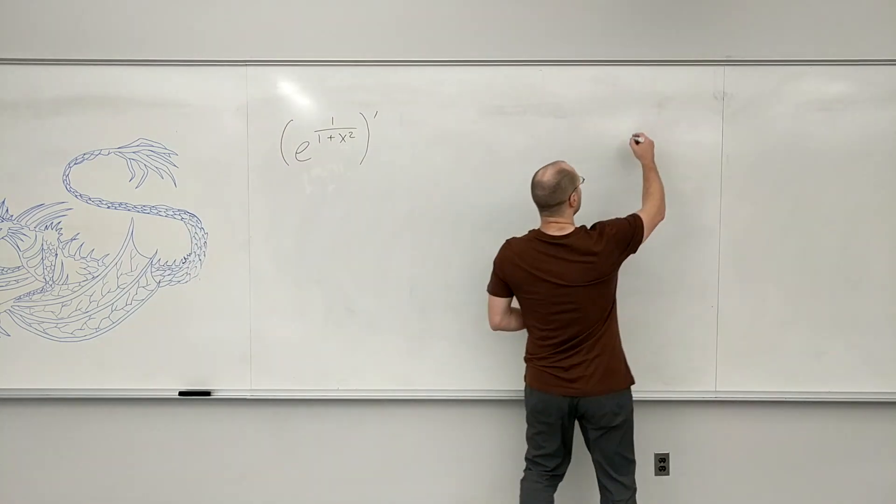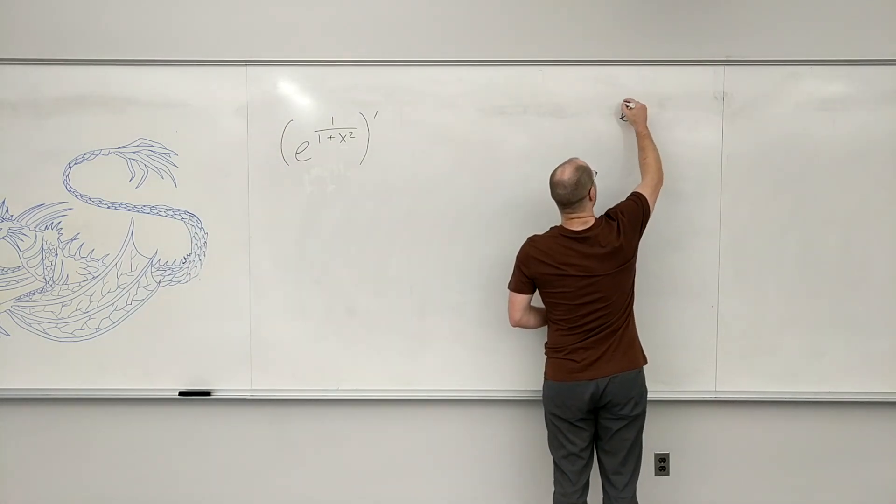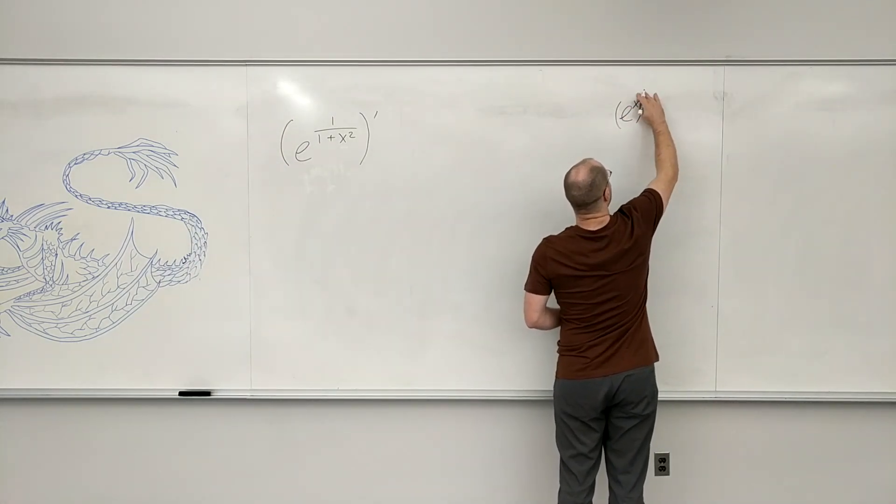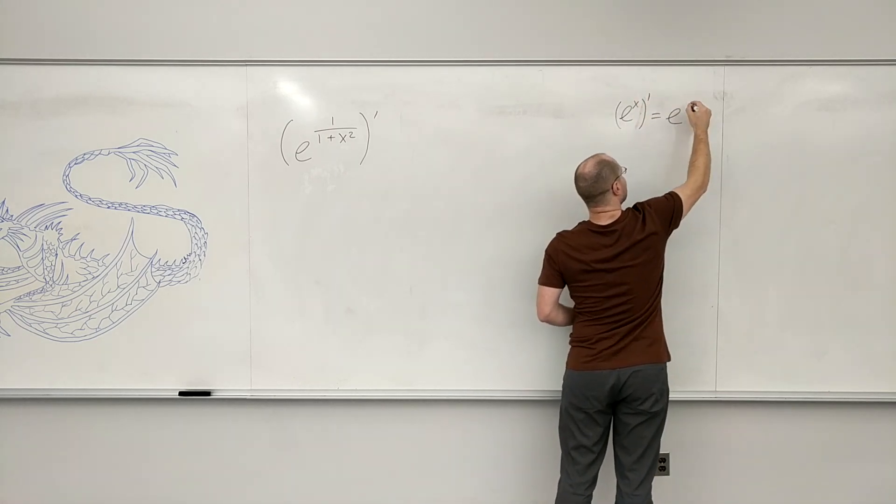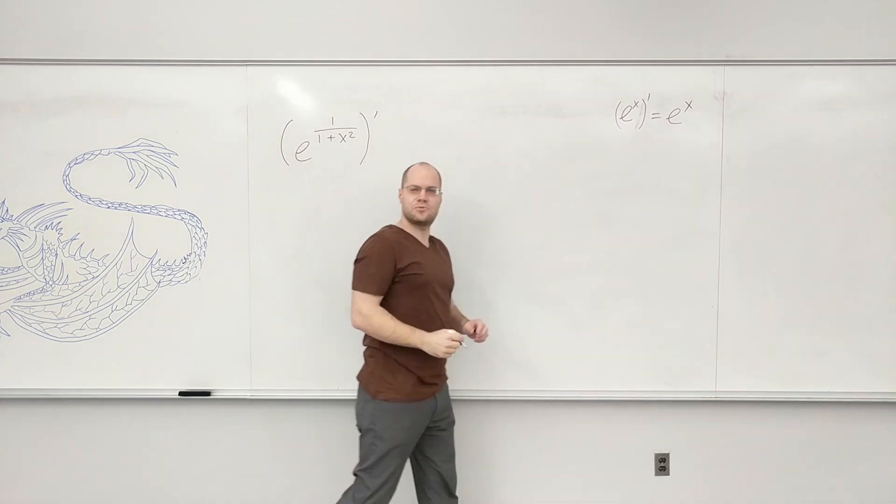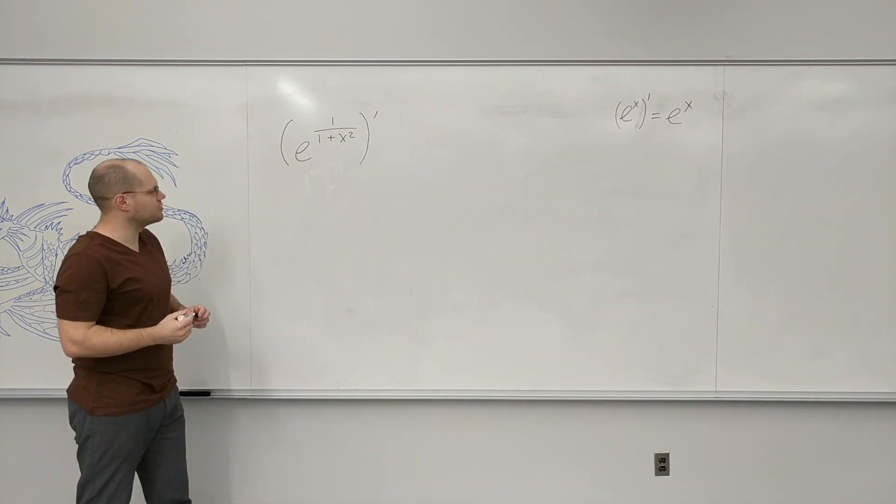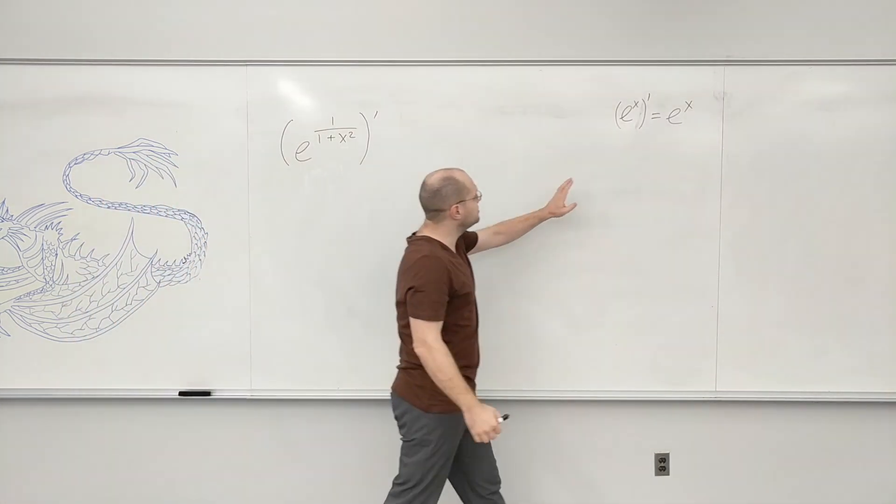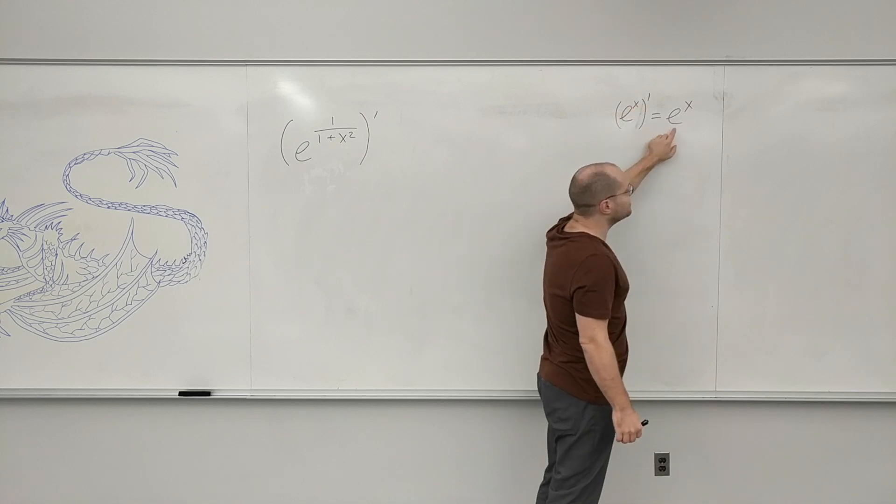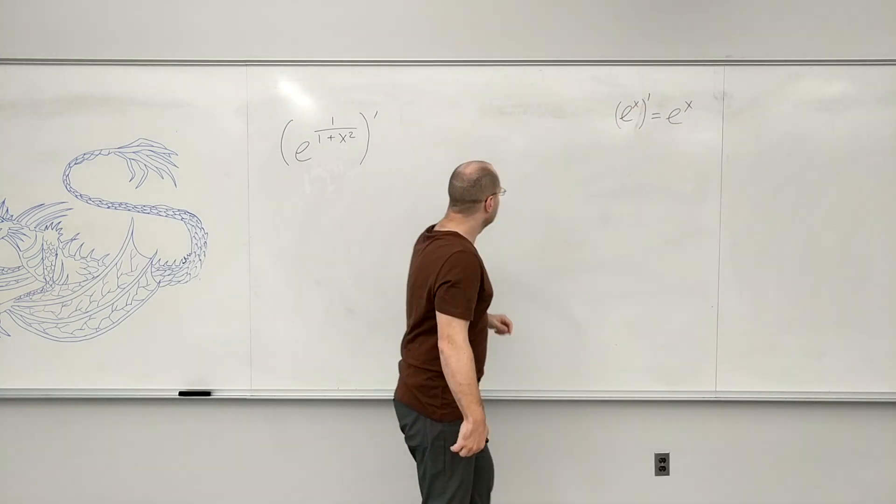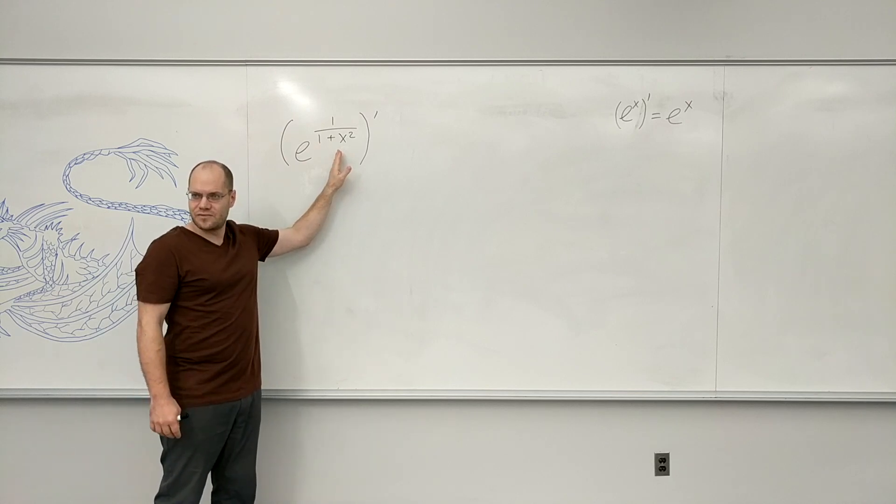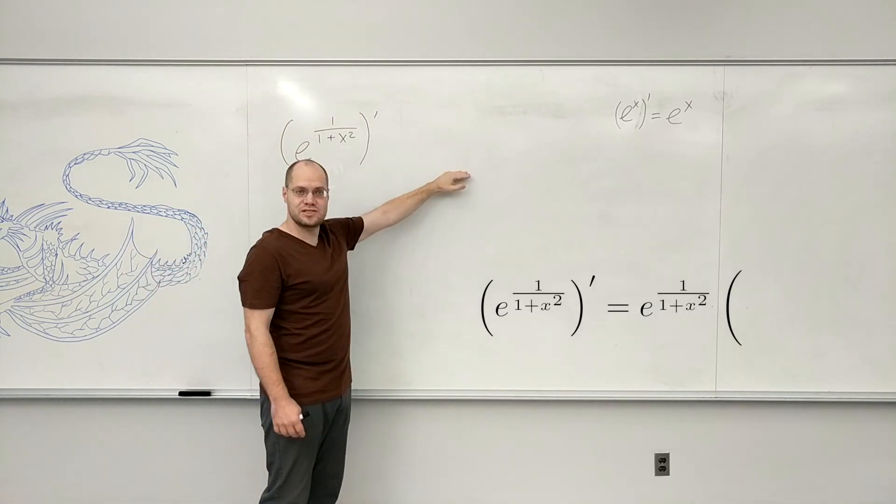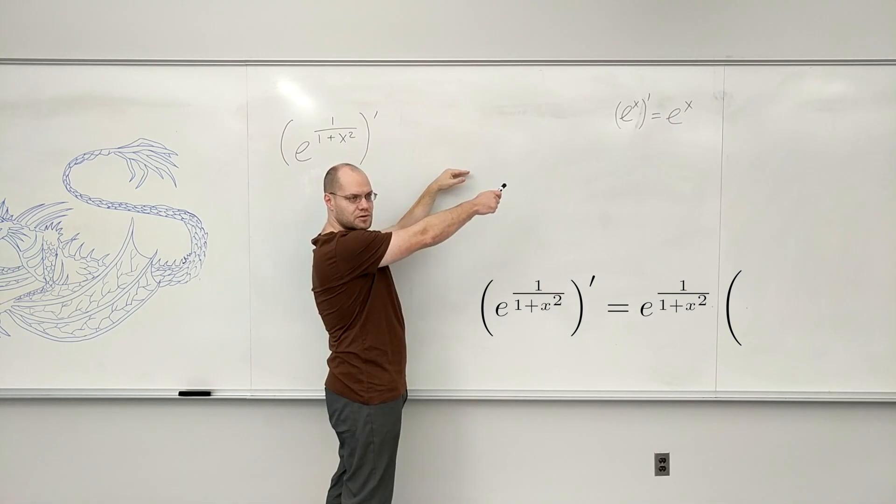When you look at this, you have to say it's e to some power. In the first step, it doesn't matter what that power is - it's e to some power. Therefore, you'll be taking advantage of the fact that the derivative of e to the x is e to the x. That's what will play the major role first.